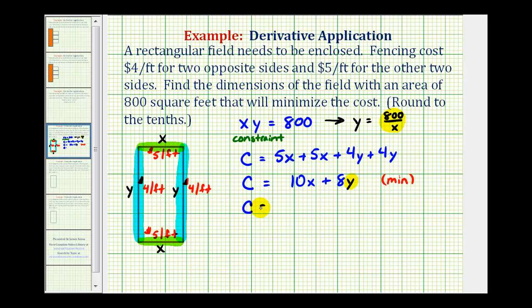So we'll have the cost equals 10x plus 8 times 800 divided by x. Now in order to minimize this, we want to find the critical numbers by finding the derivative of this function and then determining where it's equal to zero or where it's undefined. Before we do that, let's rewrite this as C equals 10x plus 6400x to the power of negative one, if we move this x up into the numerator. Remember, it's going to change the sign of the exponent.